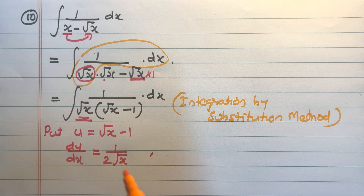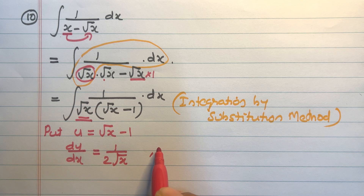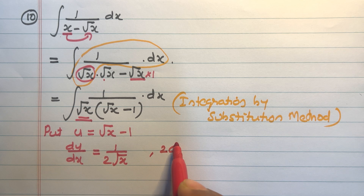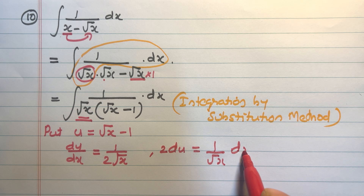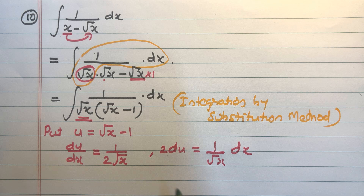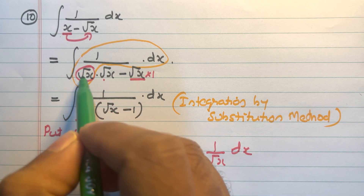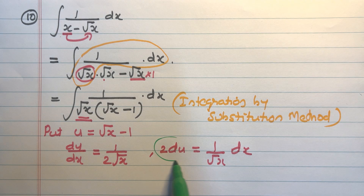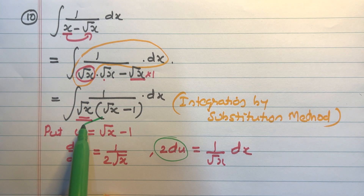Taking the 2 to the left hand side and dx to the right hand side, 2 becomes a multiplier, so 2 du equals 1 by root x into dx. This gives us the substitution: 1 by root x dx is 2 du, and root x minus 1 is u.